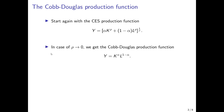We already know from the previous videos that as rho tends to zero, we get the Cobb-Douglas production function — capital to the power of alpha and labor to the power of one minus alpha. So the elasticity of output with respect to capital input is equal to alpha, and the elasticity of output with respect to labor input is equal to one minus alpha.